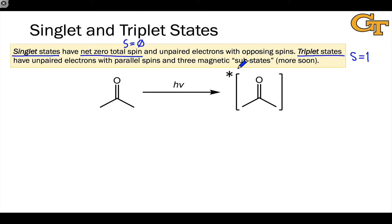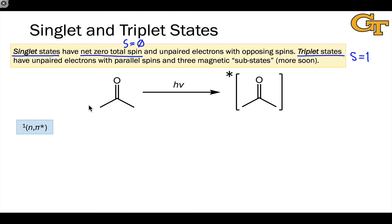Triplet states also have three magnetic substates, which we'll see what that means in a moment. For each of the electronic configurations we previously defined, we can identify singlet and triplet electron configurations, and they're different in fundamental ways.